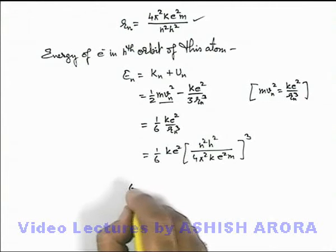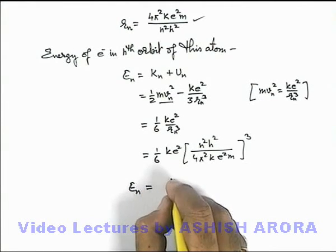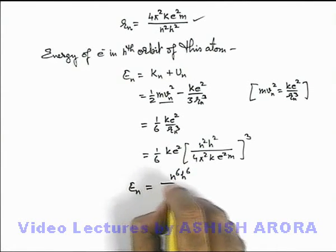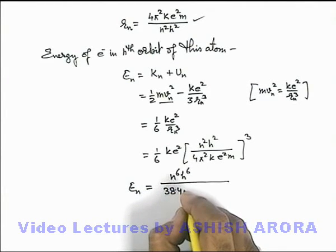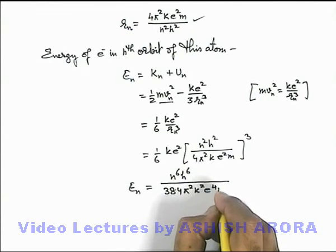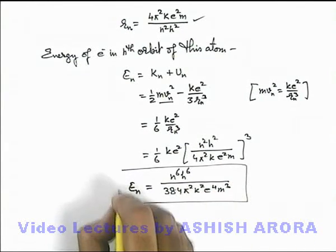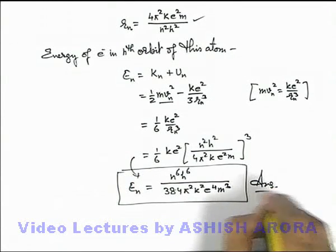On simplifying, the energy of electron in nth orbit of this atom we can write as n 6 h 6 divided by 384 pi square k square e to power 4 m cube. I am leaving this result as an exercise for you to obtain by simplifying. That will be the answer to this problem.